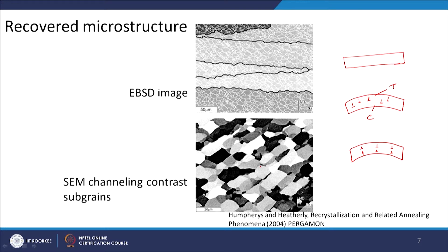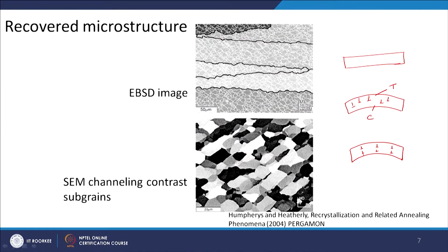Another way to look at these sub-grains — since in optical microscopy you would not be able to see them — is SEM channeling contrast. Using a scanning electron microscope with a channeling contrast technique, you can see orientation information of the grain displayed as a grayscale image. You can see small sub-grains in this image; from the scale bar of 50 microns with about 5 or 6 grains visible, sub-grain size is around 10 microns. You can use different techniques to view different microstructural features.